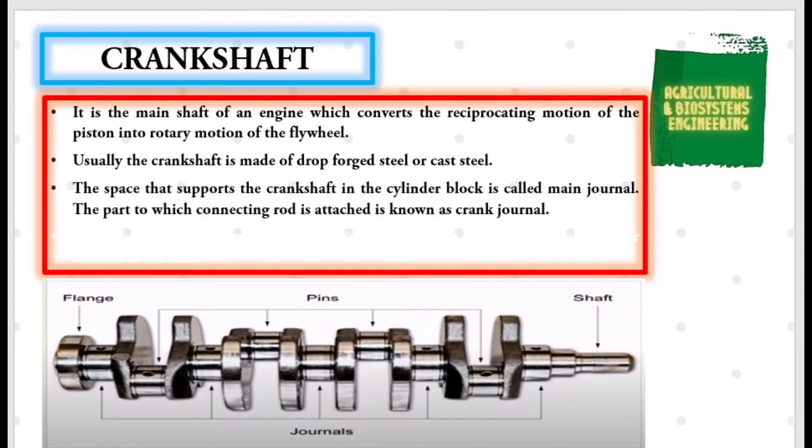The space that supports the crankshaft in the cylinder block is called main journal. The part to which the connecting rod is attached is known as crank journal. Crankshaft is provided with counterweights throughout its length to have counterbalance of the unit.